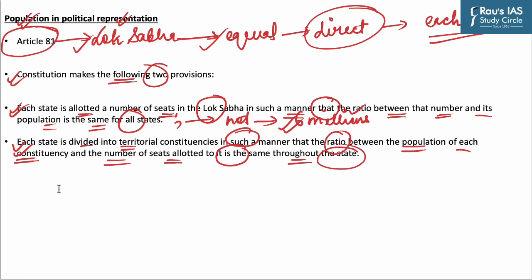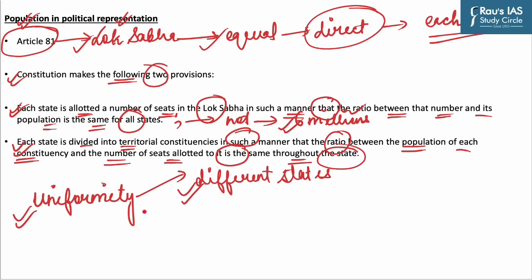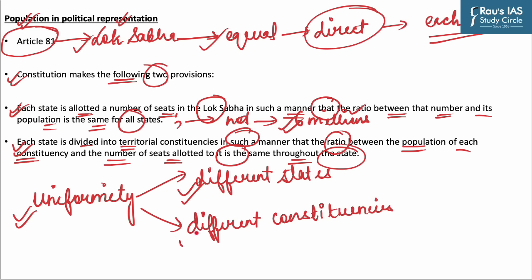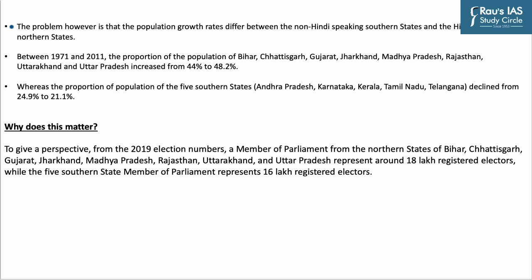In brief, the constitution ensures uniformity of representation in two respects: between different states and between different constituencies within the same state. So where does the problem arise?